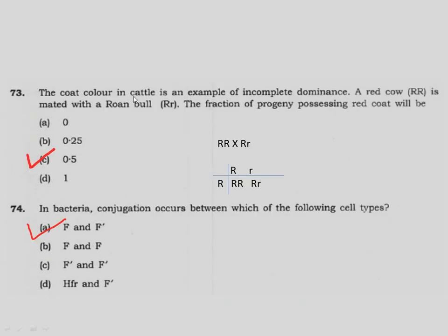Question 73: The coat color in cattle is an example of incomplete dominance. A red cow (RR) is mated with a roan bull (Rr). The fraction of progeny possessing red coat will be in the ratio of 1 is to 1. So the probability is 0.5.